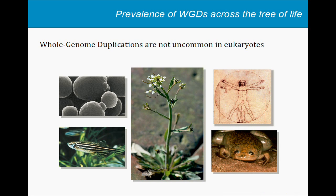Whole genome duplications are not that uncommon. We find evidence for ancient whole genome duplications in many different eukaryotic lineages. The most solid ones are probably in yeast. There are also some ancient gene duplications at the basis of vertebrates, a third one specifically for teleost fish. Virtually every flowering plant is polyploid, with sometimes multiple genome duplications. And also Xenopus has some fairly recent gene duplication.